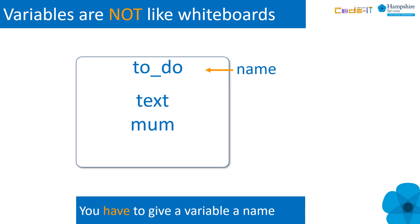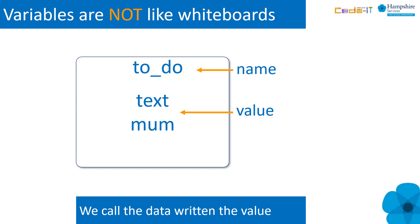Whiteboards are useful but not perfect. If we use them, we must also explain the limitations of the analogy. We don't have to name our whiteboards, but we do have to name every variable or the digital device won't be able to identify it. We call the data assigned to a variable the 'value' — I have never heard anyone talking about the value of their whiteboard outside of a computing lesson.